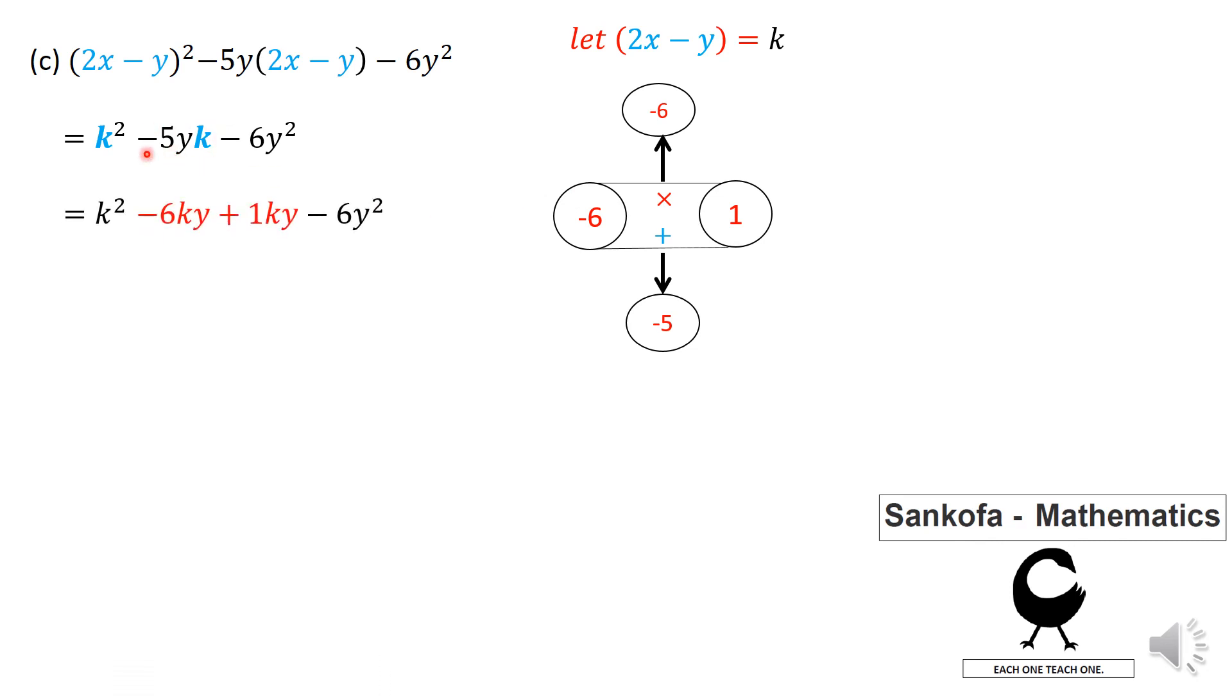So I can therefore split the minus 5ky term as minus 6ky plus 1ky. So now I have got four terms and here again I'm going to factorize them by grouping. I'm going to take the first two and the last two. So in the first two terms k is a common factor. And in the last two terms y is a common factor.